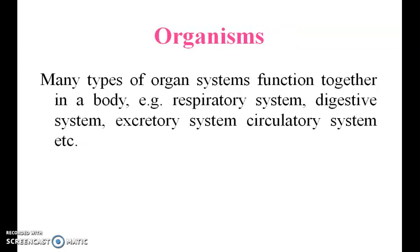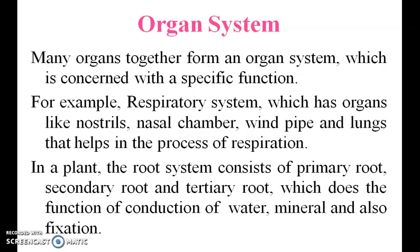An organism has many types of organ systems that function to form a body — for example, the respiratory system, digestive system, excretory system, and circulatory system. An organ system is formed when many organs together work toward a specific function.